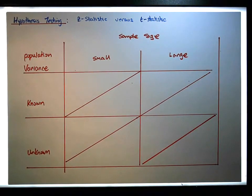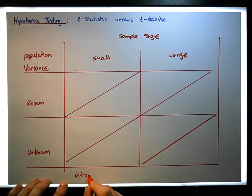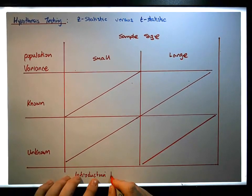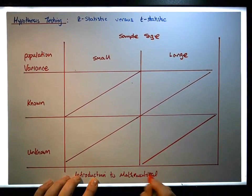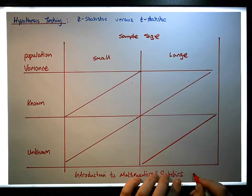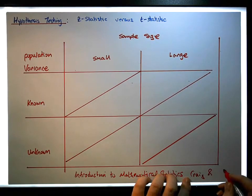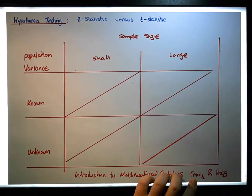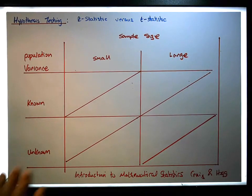The reference I want to provide is 'Introduction to Mathematical Statistics' — it's an old text by Hogg and Craig. I think the version I have is one of the early editions, actually the second edition of that particular text.